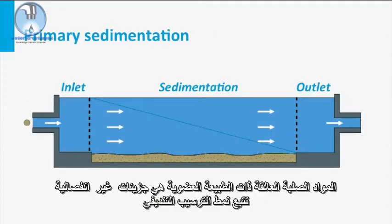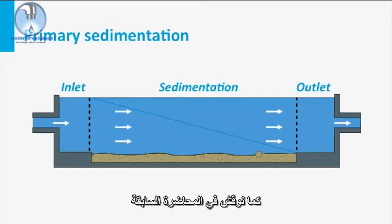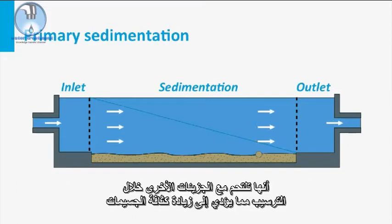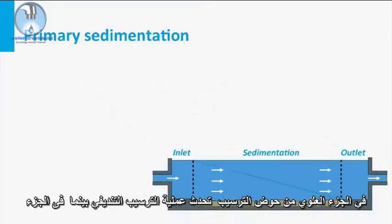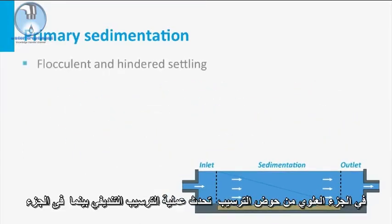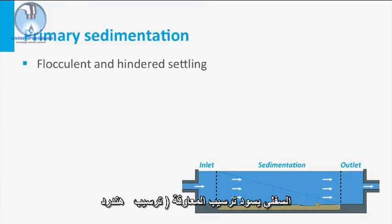Suspended solids of organic nature are non-discrete particles and follow the flocculent settling pattern as discussed in a previous lecture. They coalesce with other particles during settling, leading to increased particle density and thus increased settling velocity. At the upper part of the clarifier, the flocculent settling process occurs, whereas at the lower part, hindered settling is dominating.